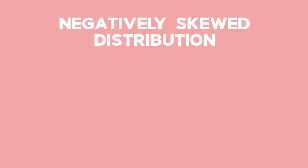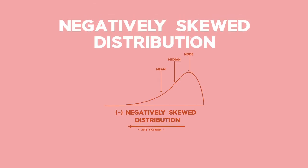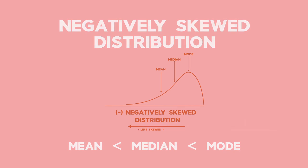In a negatively skewed distribution, the mean and median are pulled toward the right, creating a longer tail on the left of the distribution. The mean would be greater than the median, and the median would be less than the mode in this case.